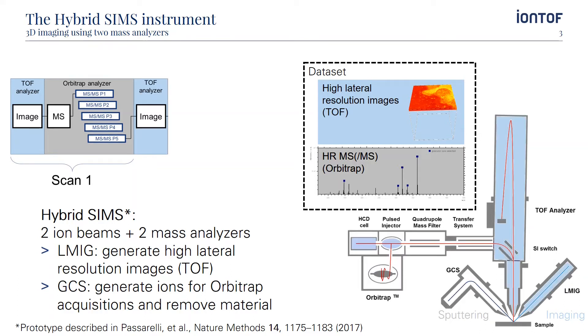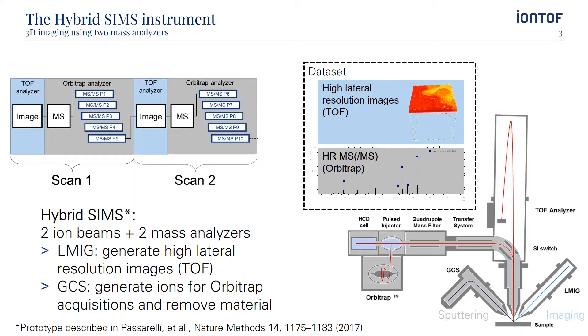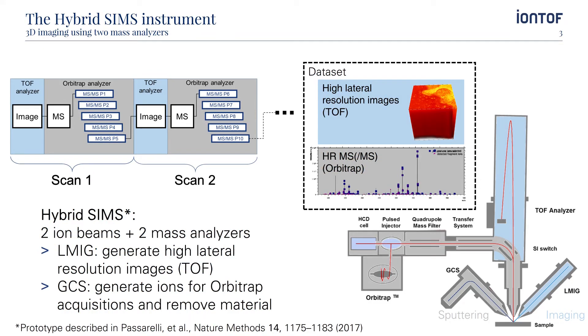By repeating these steps, a dataset is acquired which includes the 3D data from the TOF images, plus high-resolution MS and MS-MS spectra of the different sample layers from the Orbitrap measurement.